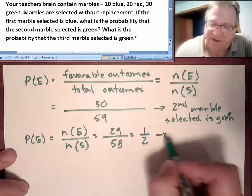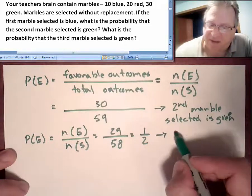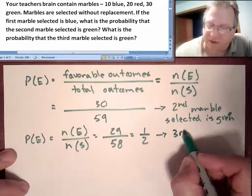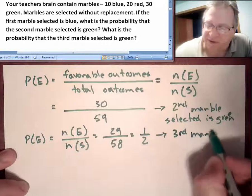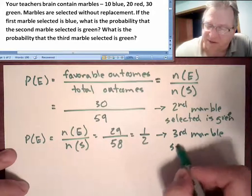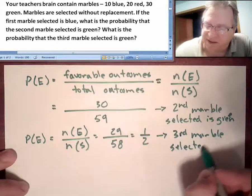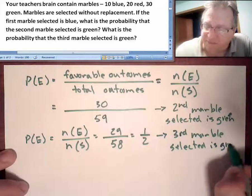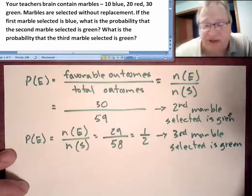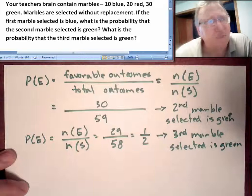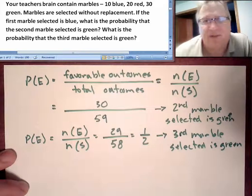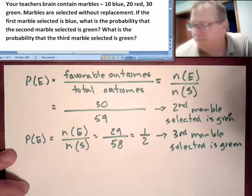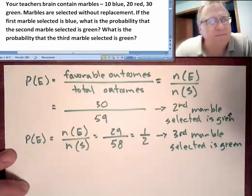One half is the probability that the third marble selected is green. This is given the fact that the first marble selected was blue and the second marble selected was green.